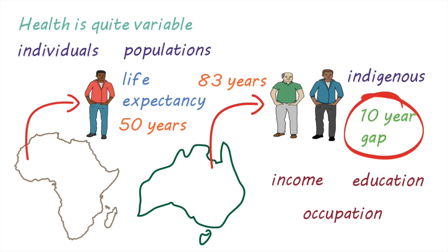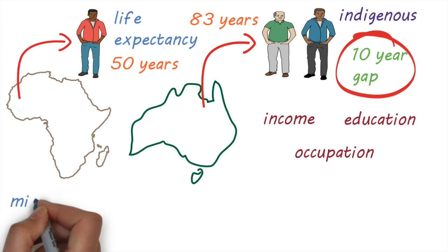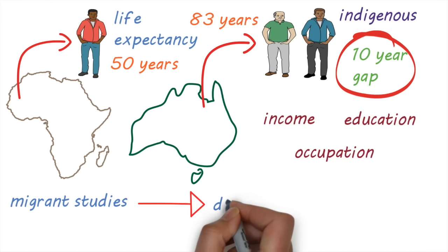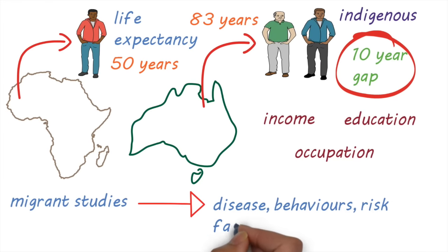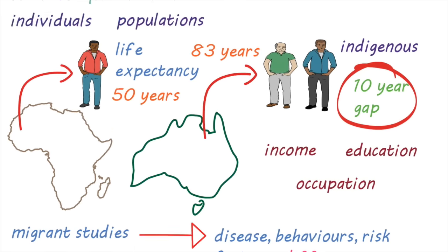Health status can change as well. For example, studies of migrants have shown that the types of diseases, health behaviors, and risk factors are different in migrants compared to those in their country of origin.